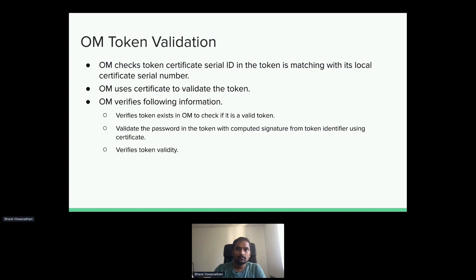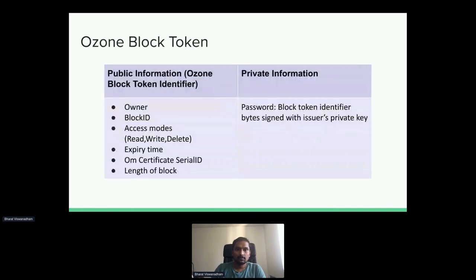The block token is similar to OzoneManager. The difference is that the data node is where the validation happens, and the data node may not have the OzoneManager's certificate. But it can request it from the CA via a secure protocol to get the certificate and finish the validation. The block token has special access modes, so we can enforce authorizations — some tokens can only allow reads while others allow writes. It also has the OzoneManager certificate serial ID so that the data node can figure out which public key was used to validate the block token.